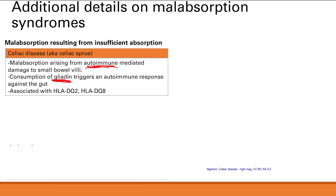Celiac disease is associated with HLA-DQ2 and HLA-DQ8. A mnemonic to remember: DQ2 and DQ8 — think 'Dairy Queen' as a food association, since this is a food-triggered disease.